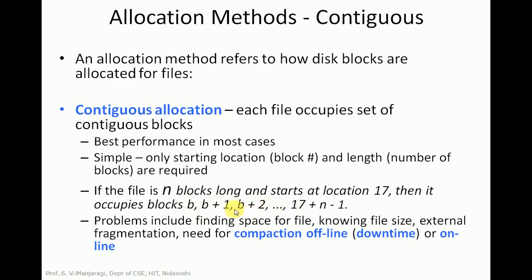There are some problems with contiguous allocation, like finding space for files — it might be difficult to find contiguous space for a file. There is also a problem of external fragmentation. As files are created and deleted in the file system, the remaining free space becomes fragmented, meaning no contiguous blocks are available to allocate to files. To solve external fragmentation we need to go for compaction. So contiguous allocation may lead to external fragmentation and there is a need for compaction.